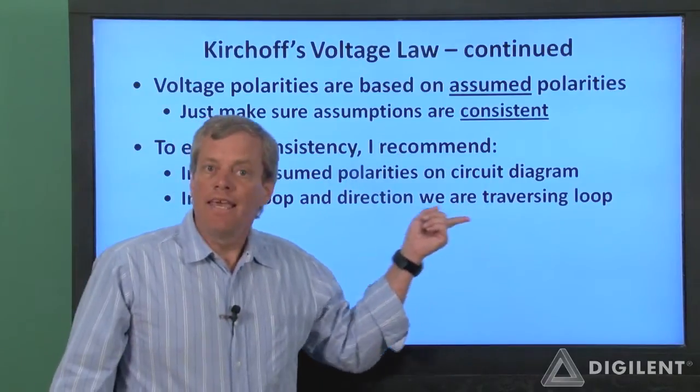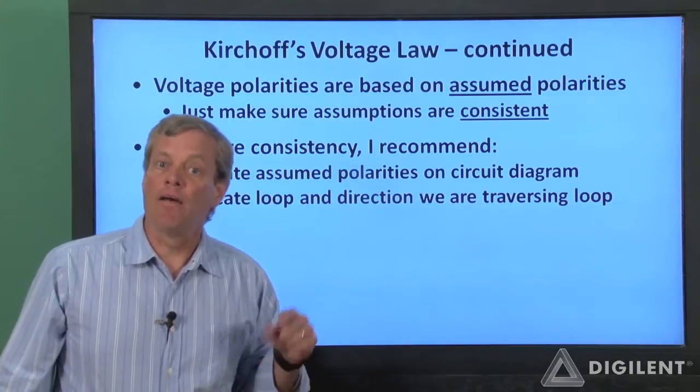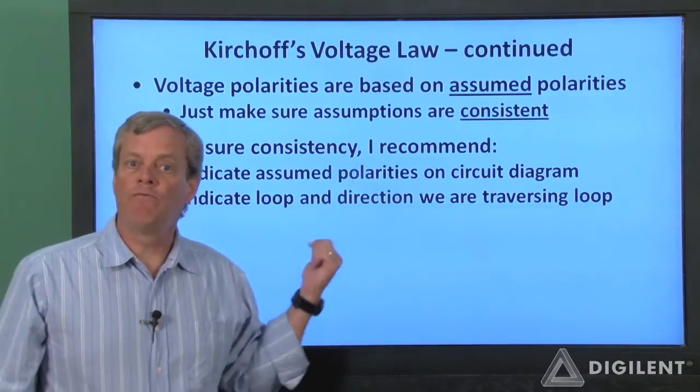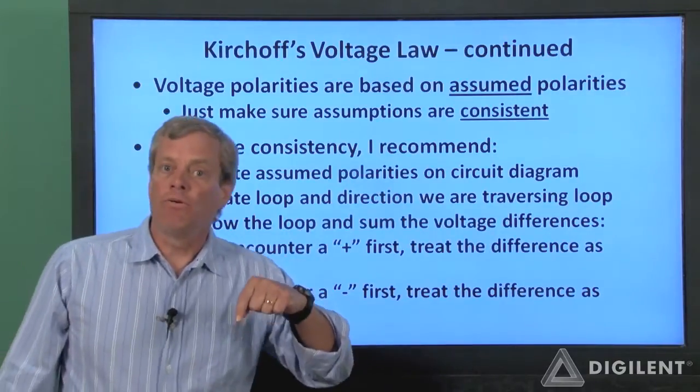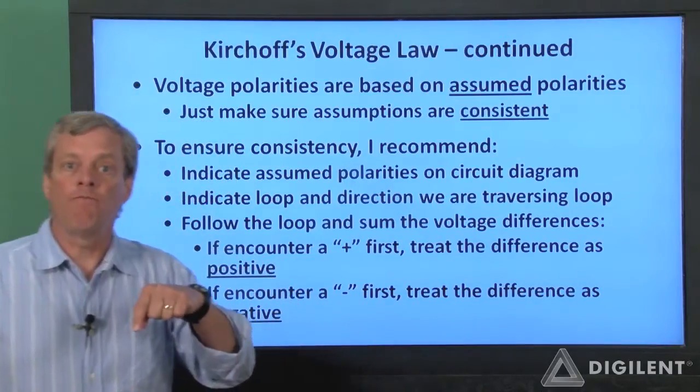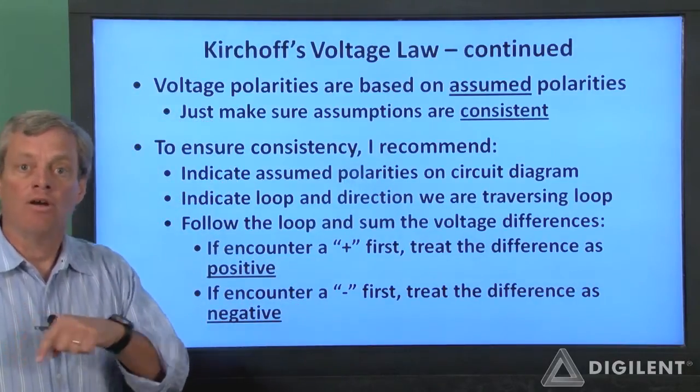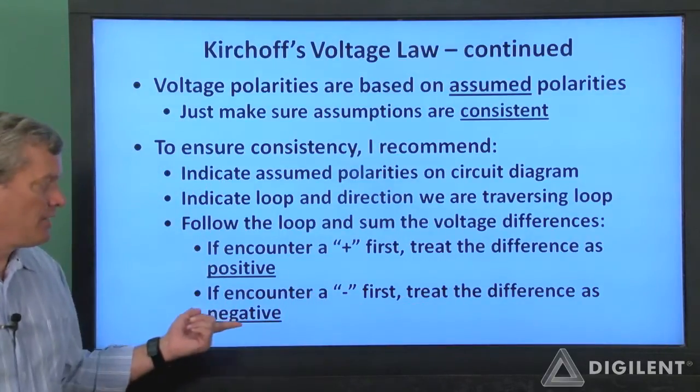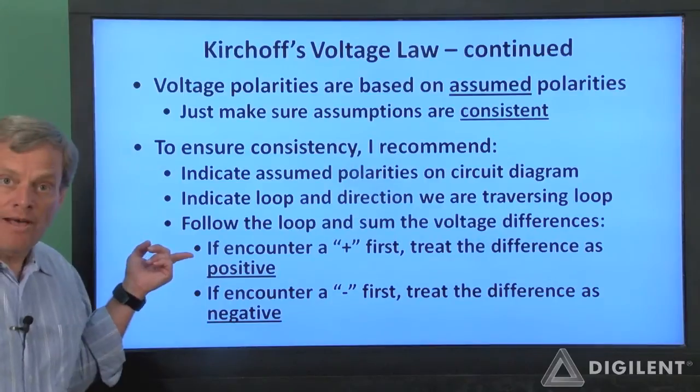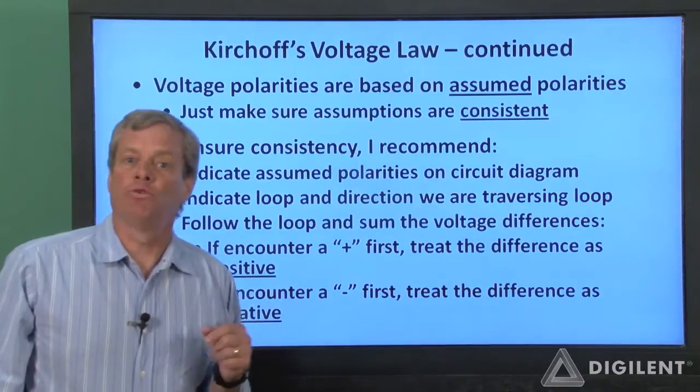When writing KVL, indicate the loop on the diagram, including the direction you will be following the loop. Finally, pick a starting point at any point on the loop and follow the loop you indicated on your schematic. When you encounter a voltage difference, if you see a negative sign first, treat the difference as negative. If you see a positive sign first, then add that voltage difference.